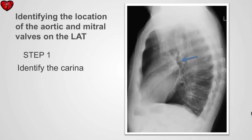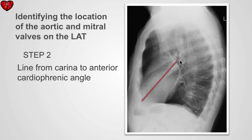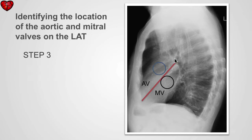So how do we identify the aortic and mitral valves on the lateral x-ray? The first step is to use our previously learned skills and identify the carina. Next, we draw a line from the carina to the anterior cardiophrenic angle. The aortic valve will lie superior to this line, and the mitral valve will lie inferior to this line.